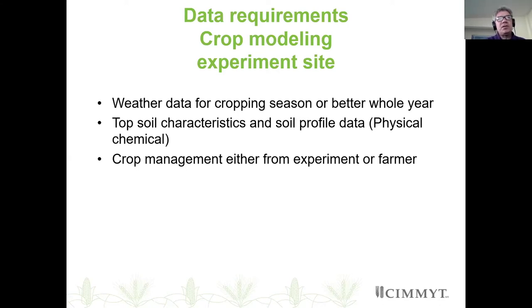For experimental sites it's normally a bit easier. Ideally you want weather data for the cropping season, top soil characteristics and soil profile data, and physical and chemical parameters. Crop management can be obtained from experiment descriptions, farmer interviews, or recorded directly. But when you want to use hundreds of different sites, it gets very tricky — there are gaps, improper descriptions, and errors.